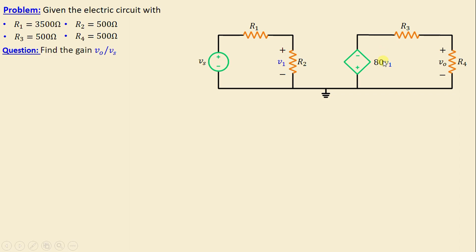dependent source, especially a voltage-controlled voltage source. The question now is to find the gain vo/vs. Let's move on to the solution. First, by applying the voltage divider